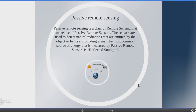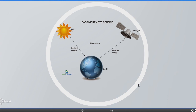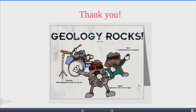Passive remote sensing is a class of remote sensing that makes use of passive remote sensors. The sensors detect natural radiation emitted by the object or by its surrounding areas. The most common source of energy measured by passive remote sensors is reflected sunlight. Here we can see a graph showing how passive remote sensing can be measured and processed. Thank you everyone.